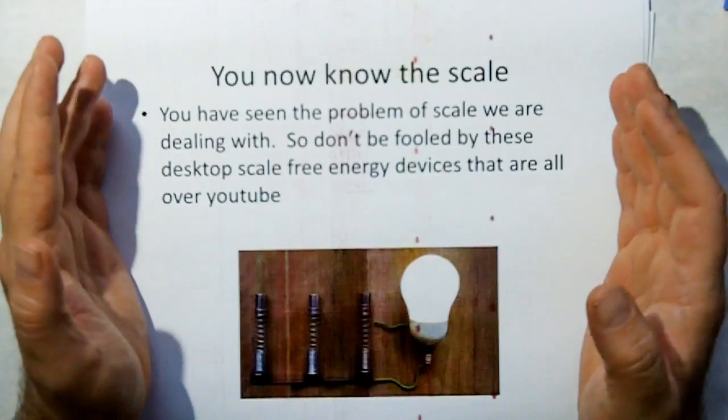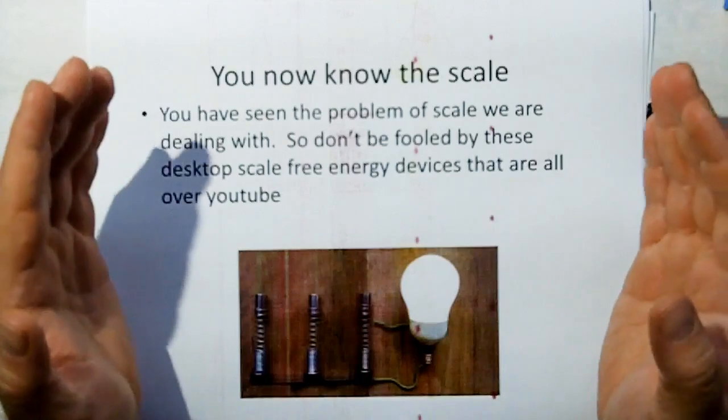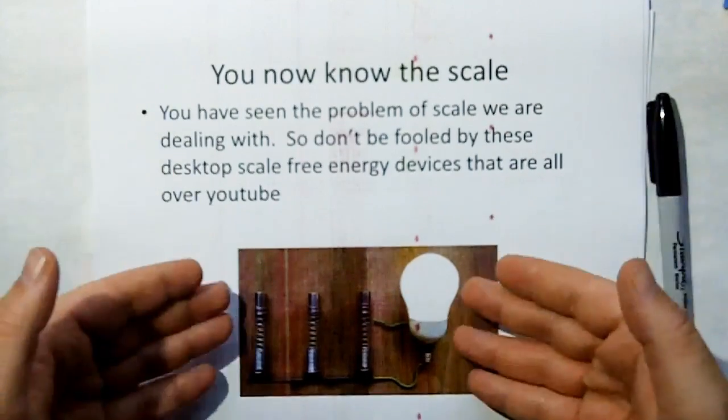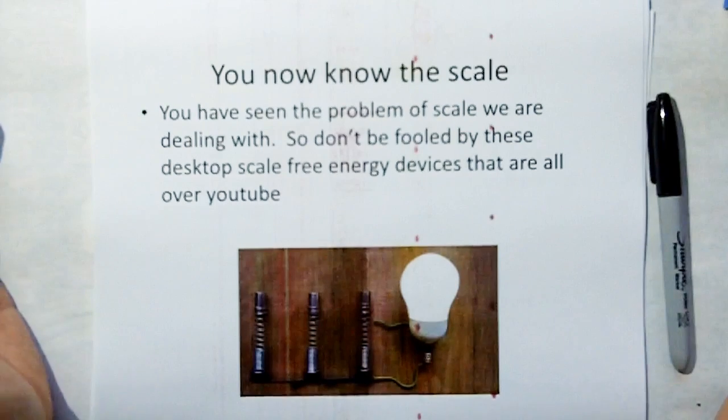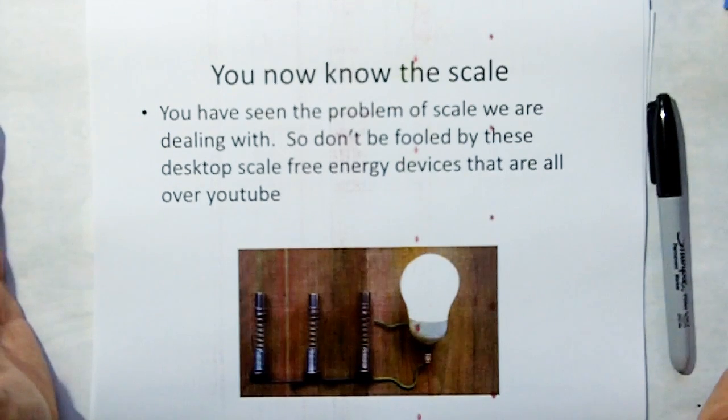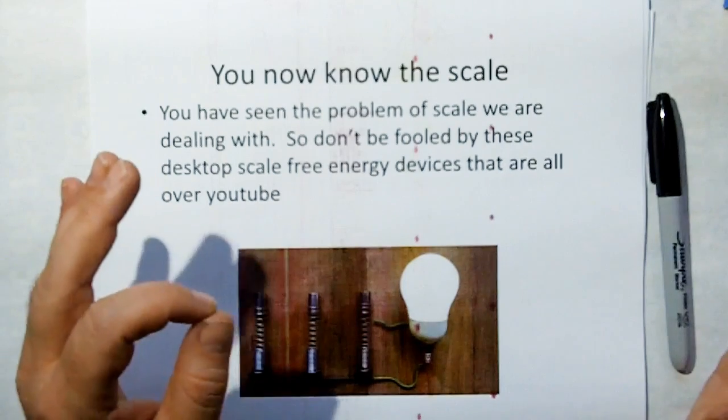Now you know the scale of what we're up against. And that's why when you look at these charlatans on YouTube with their little desktop experiments making light bulbs glow from these little things here, you're not going to be fooled by them, because you realize that we have a massive scale problem here.